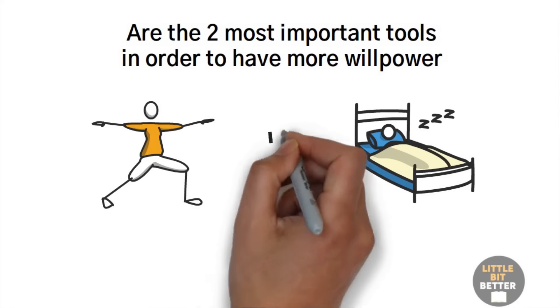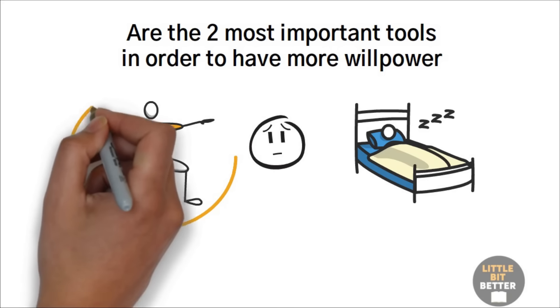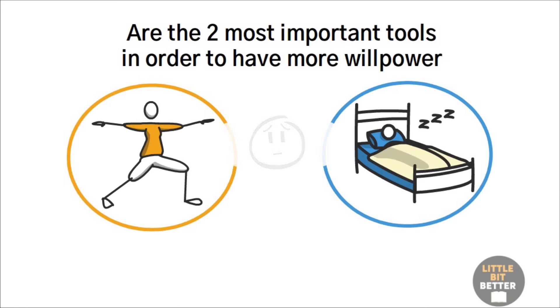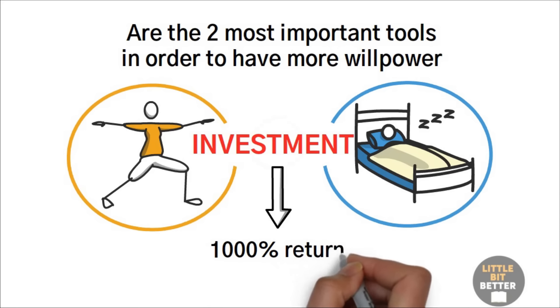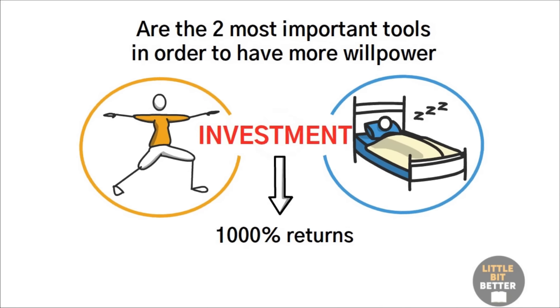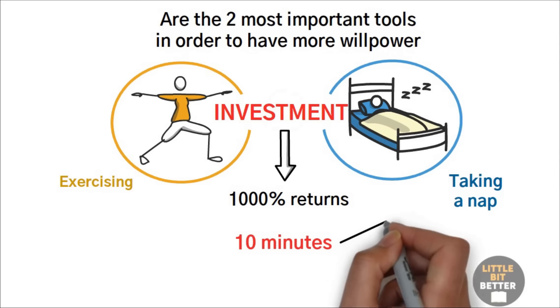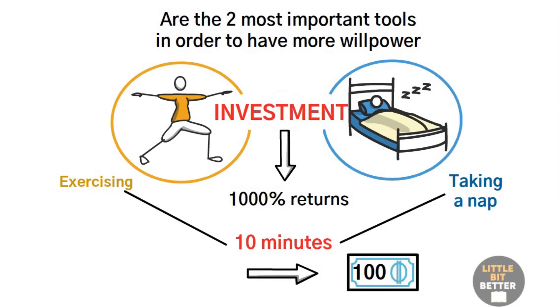Exercise and sleep are the two most important tools in order to have more willpower. And ironically, these two are the ones you'll probably end up procrastinating on. If you find yourself procrastinating to exercise or go to bed early, then try to think of it as an investment that will provide at least 1000% returns in the future. To say it differently, exercising, meditating, or taking a nap for 10 minutes is like giving a $10 bill and getting back a $100 bill.